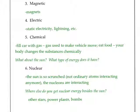For the remaining types of potential energy, we may discuss these later in the year, but for now you only need to be able to list them. They are magnetic, electric, chemical, and nuclear. That's it for this section. Next time we will pick up with talking about kinetic energy.